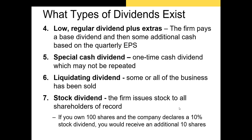Finally, we can have stock dividends. Stock dividends are dividends of additional shares of stock to each shareholder. For example, if you own 100 shares and the company declares a 10% stock dividend, you would receive an additional 10 shares. This will increase the number of shares outstanding, which means that in the future the dividend per share will likely be a touch smaller because the total dividends are being split amongst more shares.